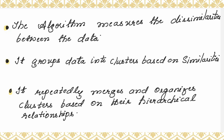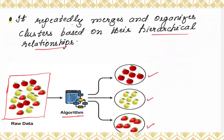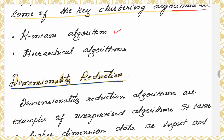How does this clustering algorithm work exactly? It measures the dissimilarities between the data, groups the data into clusters based on similarities, and repeatedly merges and organizes clusters based on their hierarchical relationships. Some of the key clustering algorithms are the K-means algorithm and hierarchical algorithms.